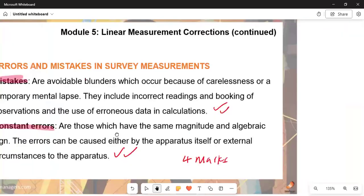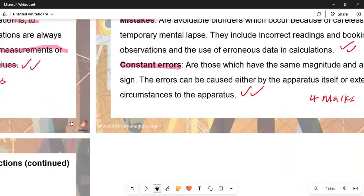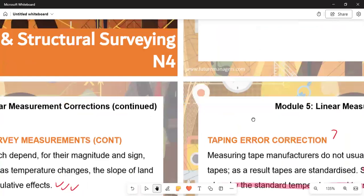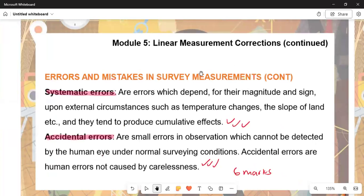Moving on to the concept of errors and mistakes in survey measurements, we have two types of errors: systematic errors, which is number one, and accidental errors, which is number two. You need to differentiate between the two.